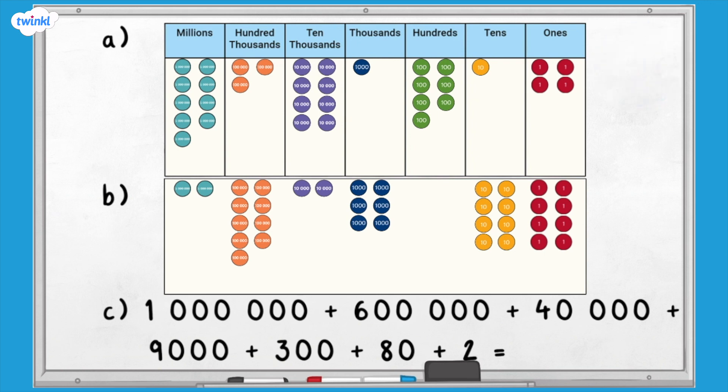How did you get on? Let's have a look at the answers. A is 9,381,714. B is 2,926,088. There are no hundreds, so we use a zero as a placeholder. C is 1,649,382.